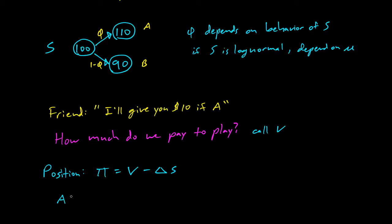So if A happens, pi_1, so this is 1 after the transition happens, we'll call over here pi_1, and over before the transition, we'll call that pi_0. So after the transition, pi_1 equals 10 minus delta times, in A, it's 110.